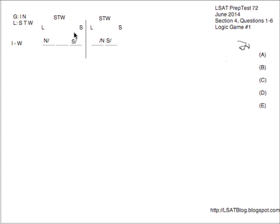Number two: if the traffic report was the last report in the first segment, then what must be true? Traffic is last in the first segment. Right away, we know S can't go on the end of the first segment because T is there, so S is going to have to go at the end of the second segment for certain. That's really the only immediate inference we can draw. When they ask what must be true, it's probably going to be about S being at the end of number two — and sure enough, choice E has that. So our answer is E for number two.